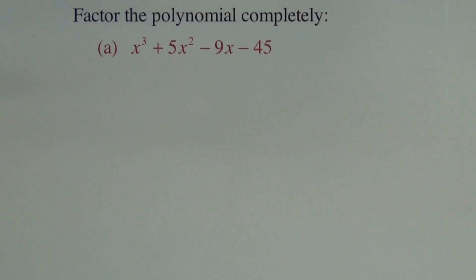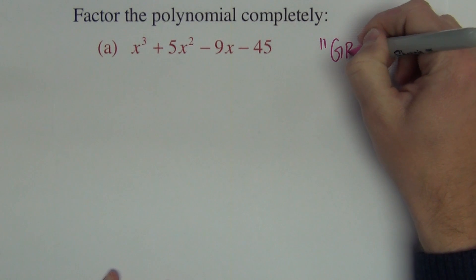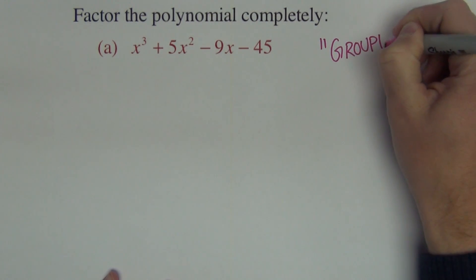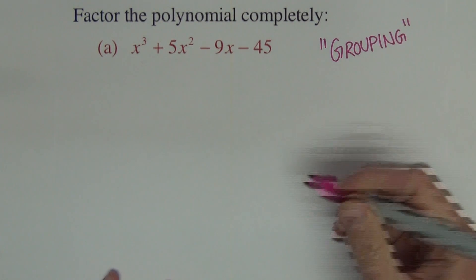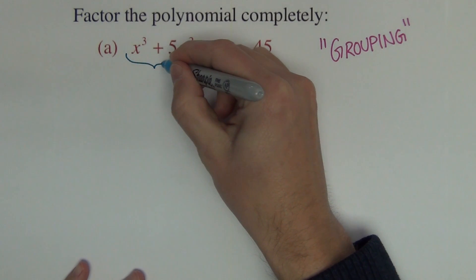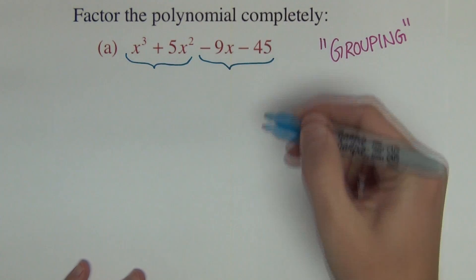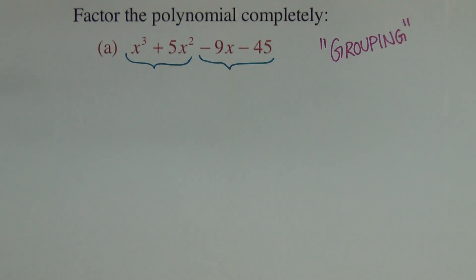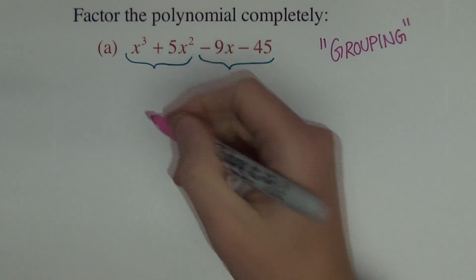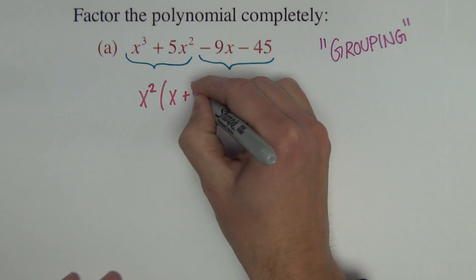Directions say factor the polynomial completely. Whenever you see a four-term polynomial, the strategy that you're going to use is grouping. With the grouping strategy, we look for common factors in pairs of terms. In the first pair of terms, there is an x squared common, and it leaves behind x plus 5.